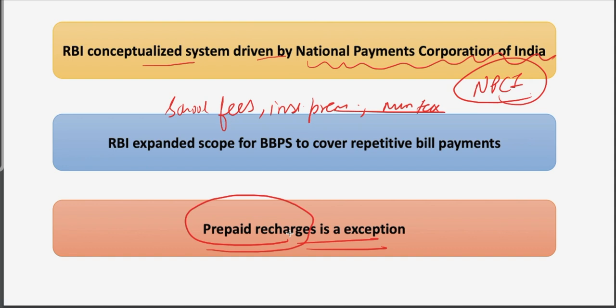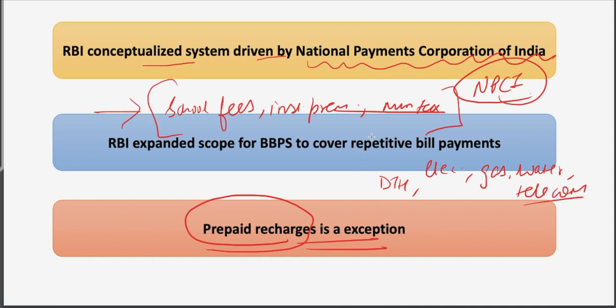Recently, RBI expanded the scope of Bharat Bill Payment System to cover repetitive bill payments, which may include school fees, insurance premiums, and municipal taxes, but this still excludes prepaid recharges, as specifically mentioned in the RBI circular. Currently, the facility of payment of recurring bills through BBPS is available only in five segments: DTH (Direct to Home), electricity, gas, water, and telecom. The expansion may cover additional bill payments beyond these.